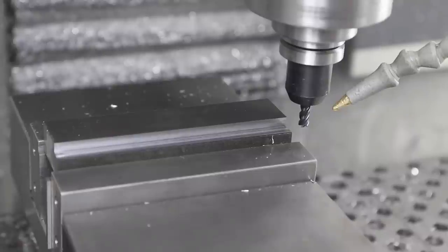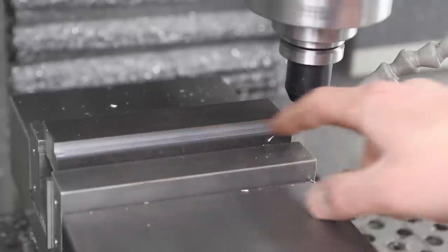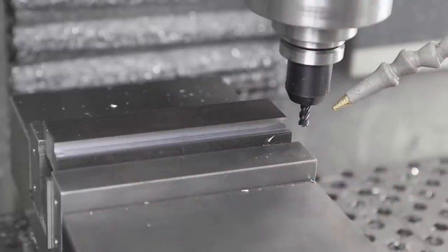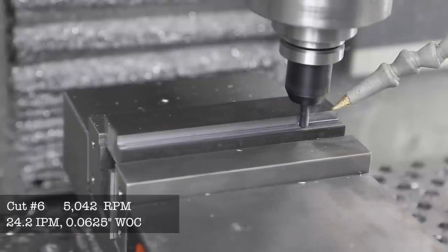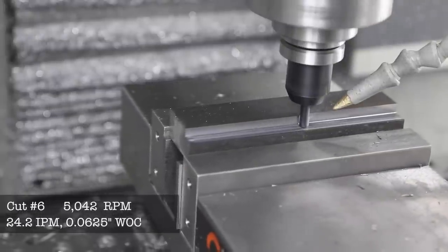This is cut number six. I'm going to talk about it before we do it because it's 24 inches a minute at the same 5,042 RPM. The difference from cut five is we're going from a chip load per tooth of 0.8 thousandths to about 1.2 thousandths. In theory this should take about 0.7 horsepower and should be by far the most significant cut we've taken in these six cuts. So far I've been pretty impressed. We haven't come close to hearing any sign of problems and the cut finish is spectacular.